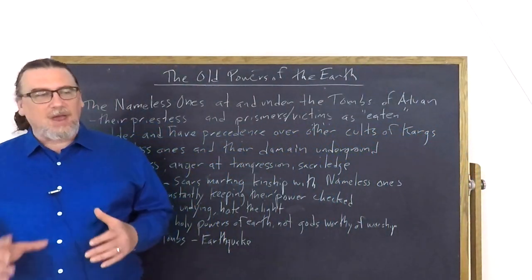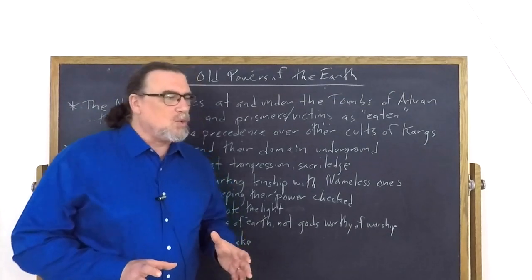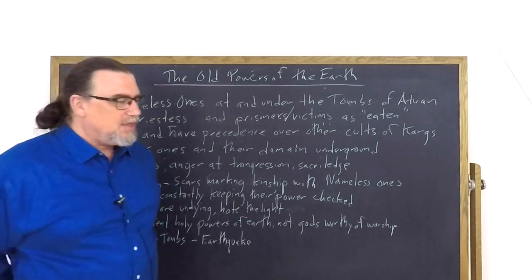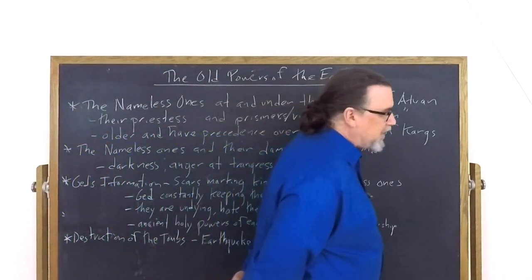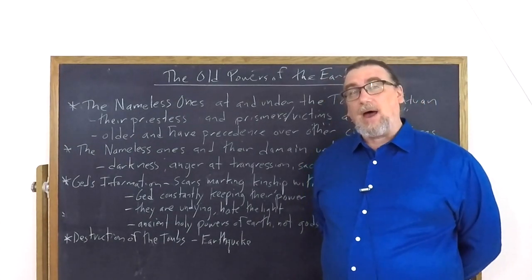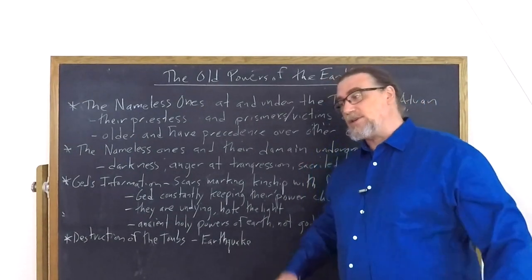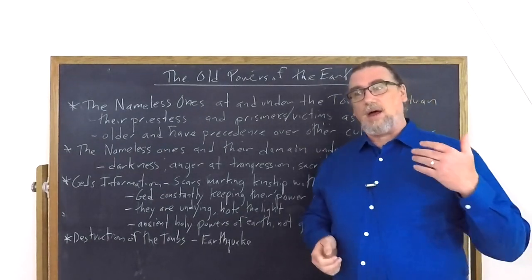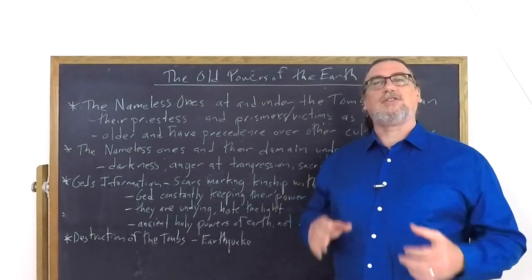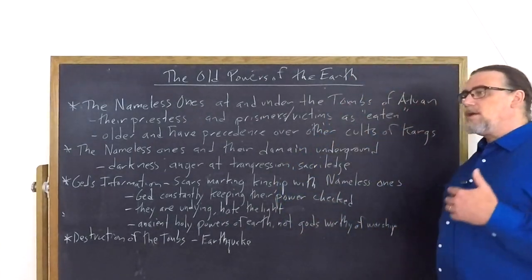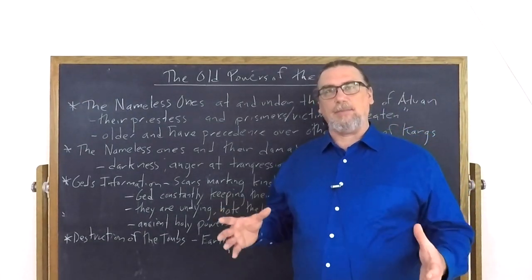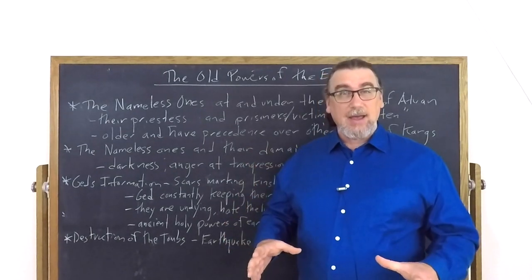We also find out that prisoners who have done terrible things—in the case of the three men who are sent, they tried to attack the God King—they're sent to Atuan for punishment by the priestess. And she, Arha, now as a young woman, takes some agency in this.